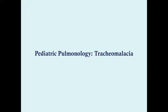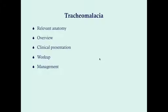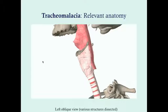We'll talk about tracheal malacia here. This is one of our major airway malformations or obstructions. These can be congenital or acquired. Tracheal malacia affects the trachea, particularly the distal one-third. We'll do a quick overview of what this is, who it affects, why, clinical presentation, and then workup and management.